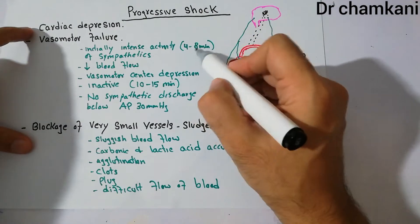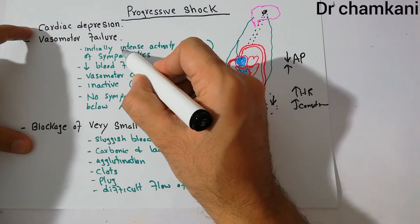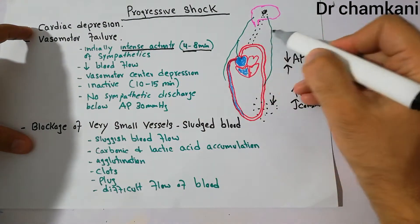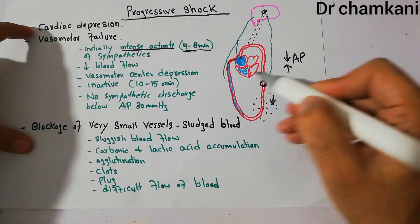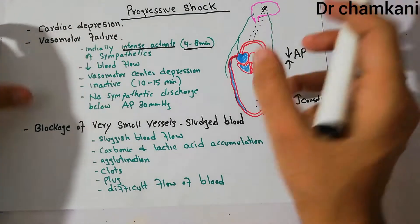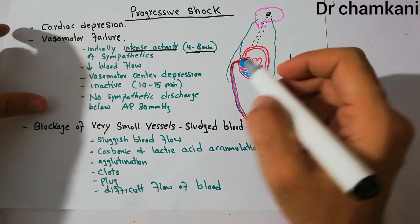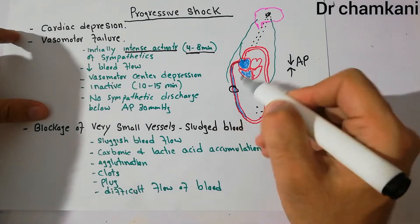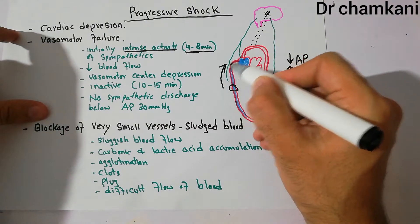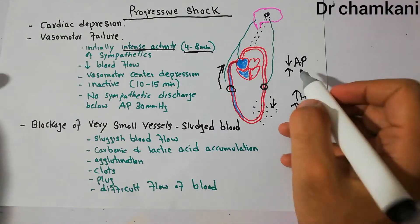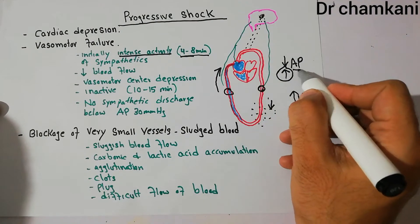In the first four to eight minutes there is very intense activity and sympathetic discharge, which leads to constriction of the arterioles — increasing peripheral resistance and helping elevate arterial pressure. It also leads to constriction of the veins, which helps in venous return by bringing blood back towards the heart and further helps in increasing arterial pressure.